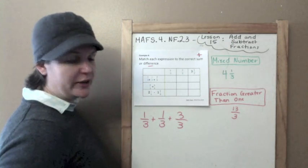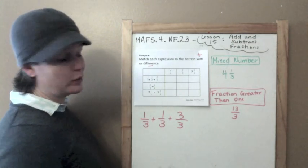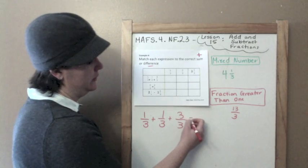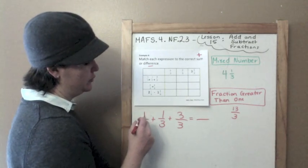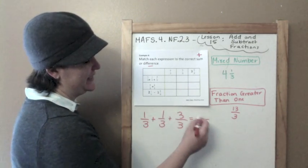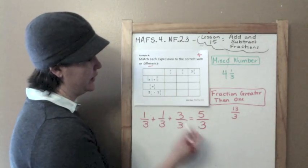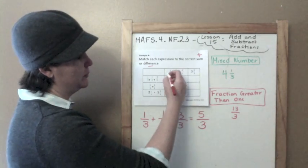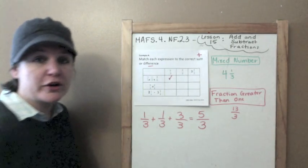All of our denominators are the same, which they should be in fourth grade. So I'm going to add my numerators. One plus one plus three is five. Slide our threes across, so this one would represent five-thirds.